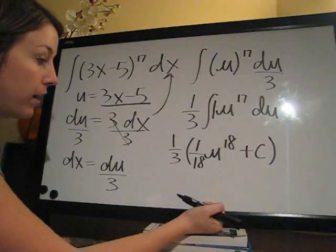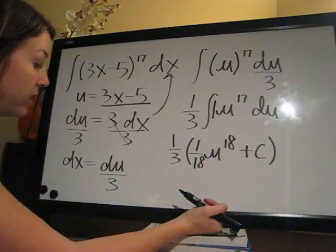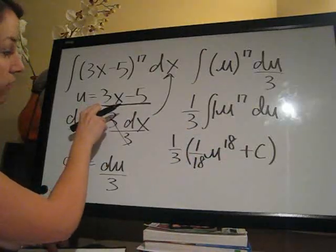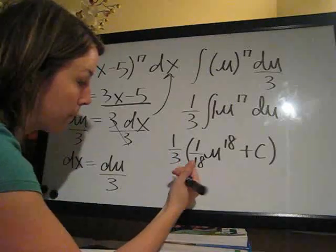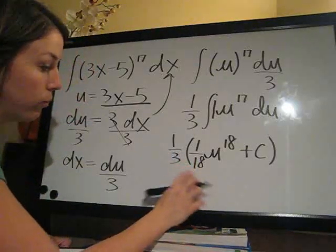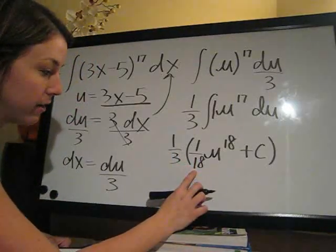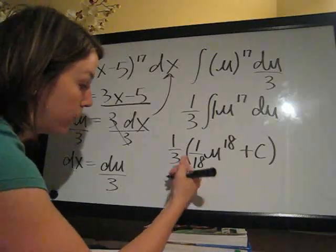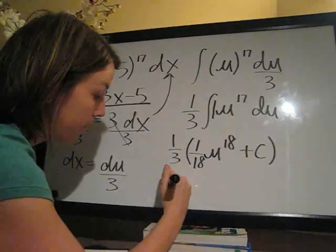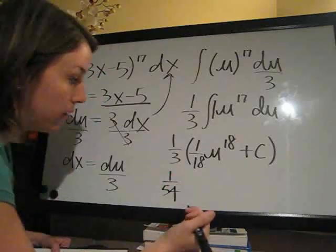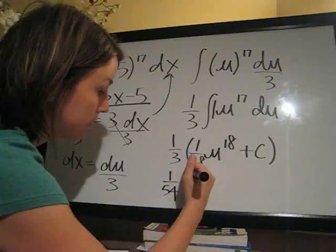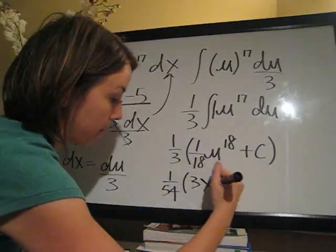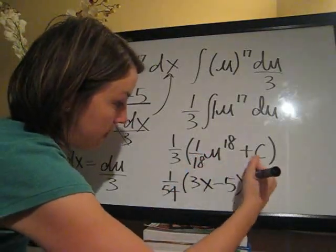So this is our integrated equation, and all we have to do is plug back in for u what they originally defined it as, 3x minus 5. So, we're going to do 1 third times 1 over 18 here. 18 times 3 is 54. So, 1 over 54 times the u, 3x minus 5 to the 18.